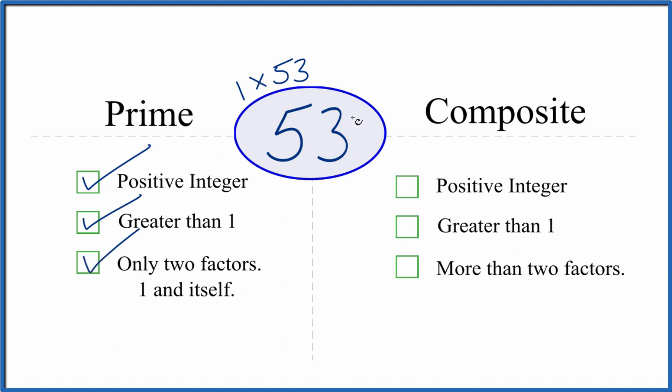Because there are only two factors, 1 and 53, 53 is a prime number.